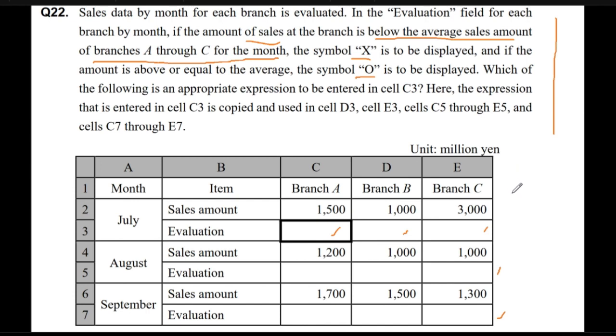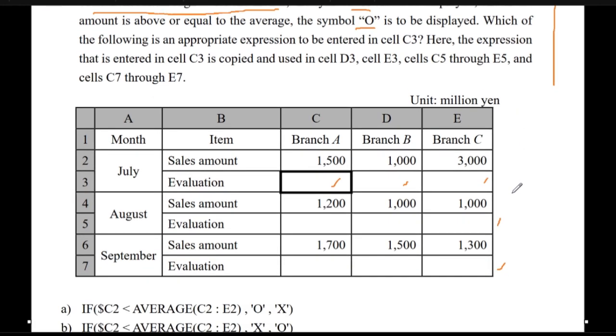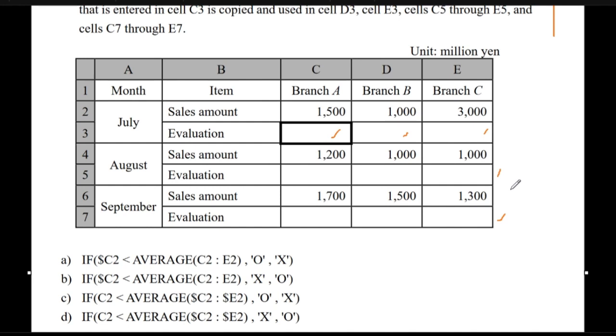I think we need to go down a little bit more to see what the choices are. We need to know the average of the sales amount for each of the three branches, and that is this part. However, there is a slight difference because some of the letters would have a dollar sign.